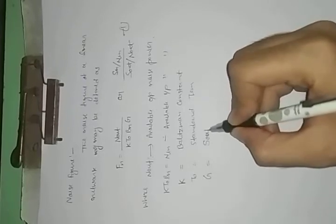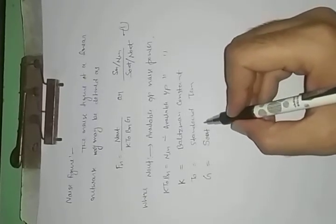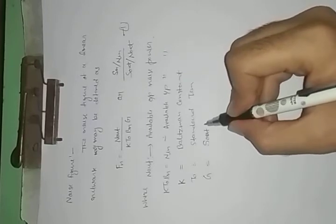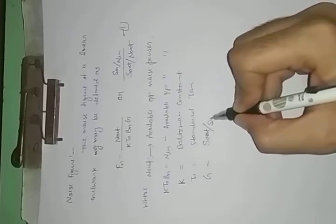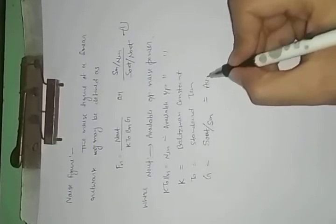G is the Available Gain, basically Signal Gain. S out, Gain is Signal Output Power upon Signal Input Power, also known as Available Gain.